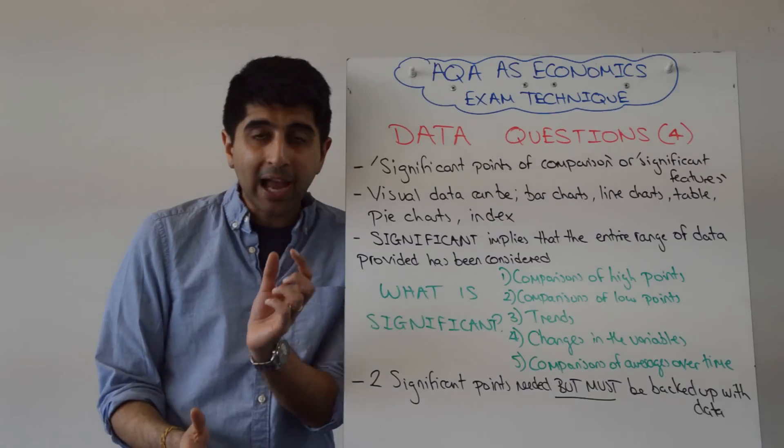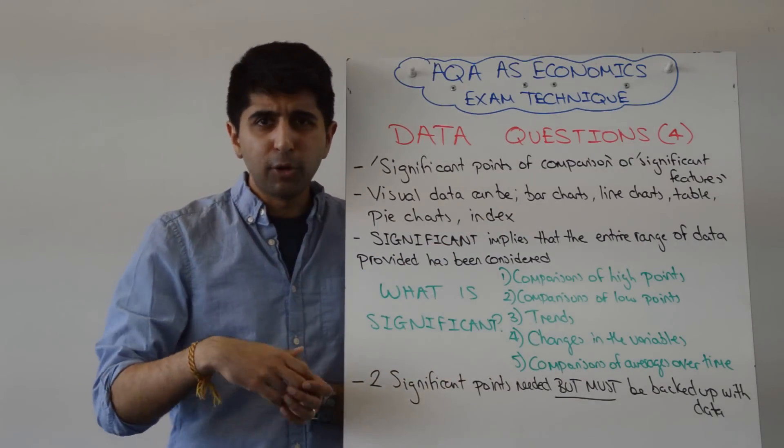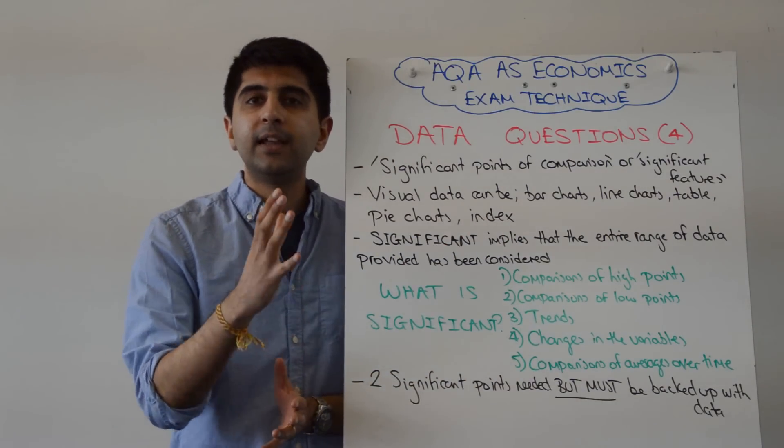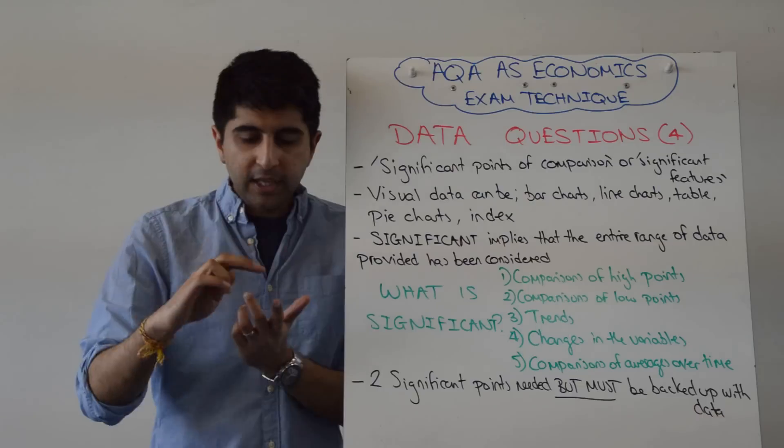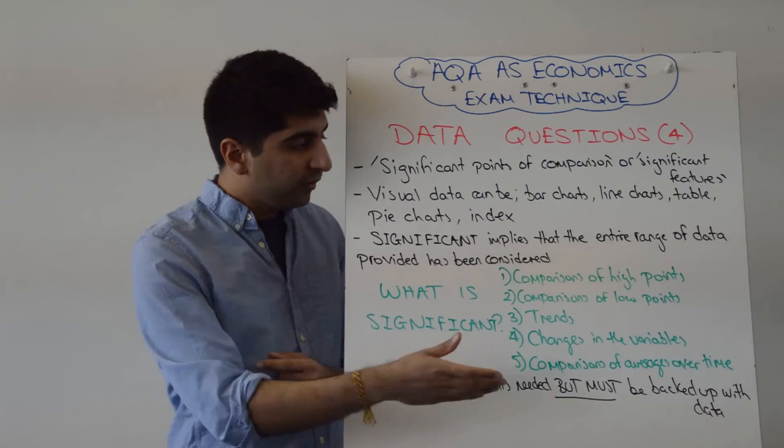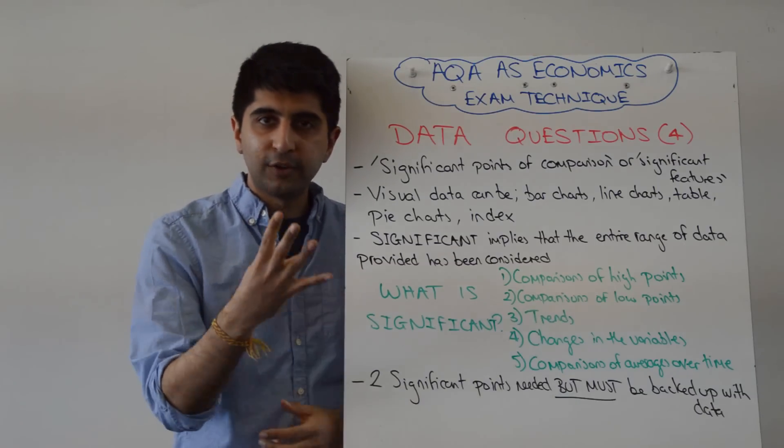Back up what you say with actual data. Take the data from the visual table or bar chart or pie chart, whatever it is, that's in front of you. That's important. Without the data, you can't score the full marks. So each point you make is worth two marks, one for the point itself, that's what's in green, one for the data. Do that twice and you've got your full marks.